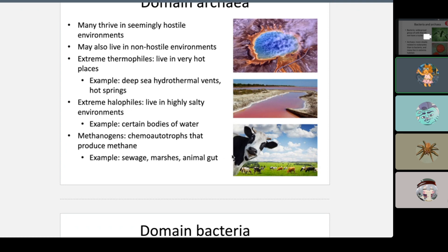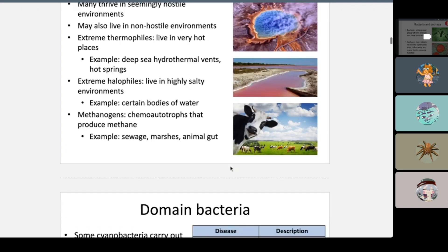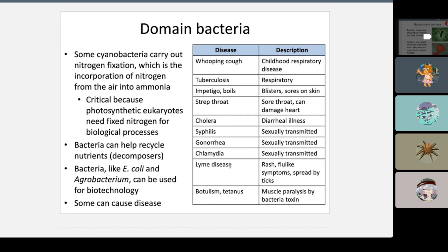Some bacteria, like cyanobacteria, carry out nitrogen fixation — incorporating nitrogen from the air into molecules — which is critical because eukaryotes need nitrogen for biological processes. Only about one to eight percent of bacteria can be fatal pathogens. Most bacteria is actually good for you.